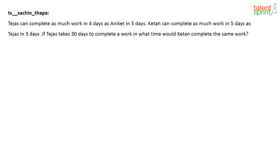It's actually a very easy one — not much calculation involved. So tell me what the answer is for this question. Let us assume that Tejas is able to complete the work in T days, Aniket in A days, and Ketan in K days.